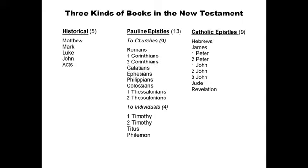These are the orders in which the books appear in your Bible. The first five books of the New Testament are Matthew, Mark, Luke, John, and Acts. Then you have your Pauline epistles — the letters written by Paul — and also the general epistles, or Catholic epistles, from Hebrews through Revelation.